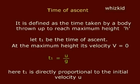Let T1 be the time of ascent. At the maximum height, its velocity v is equal to 0. Then T1 is equal to u by g. Here T1 is directly proportional to the initial velocity u.